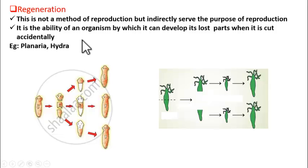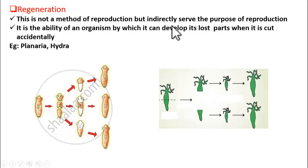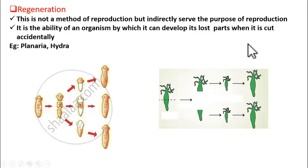Now what about advanced organisms — do they have any power of regeneration? Definitely yes, but only to some extent. For instance, take our common house lizard: it often loses its tail, and after a few days the lizard develops a new tail. That is regeneration — it has lost its tail and regained it. But in the case of the lizard, it does not serve the purpose of reproduction, because the tail cannot develop into a whole body. So regeneration is seen in advanced organisms too, but it does not lead to reproduction.